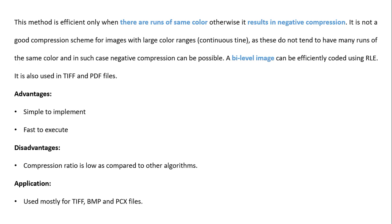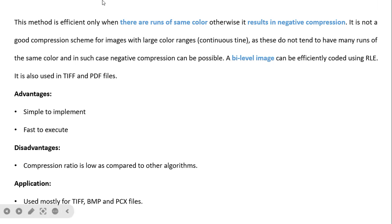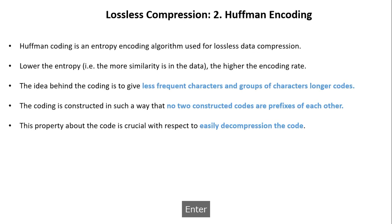This method is efficient only when there are runs of the same color; otherwise it results in negative compression. It is not a good scheme for images with large color tones as they don't have continuous runs. A bi-level (binary) image can be efficiently encoded using RLE, and it is also used in TIFF and PDF files. Advantages: simple to implement, fast to execute. Disadvantage: compression ratio is low compared to other algorithms. It is used mostly in TIFF, BMP, and fax files.